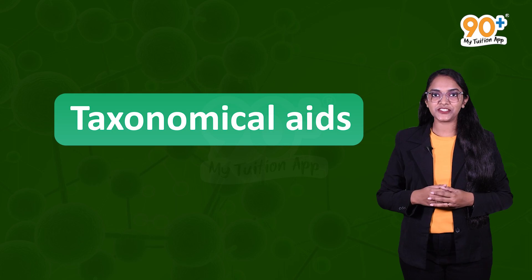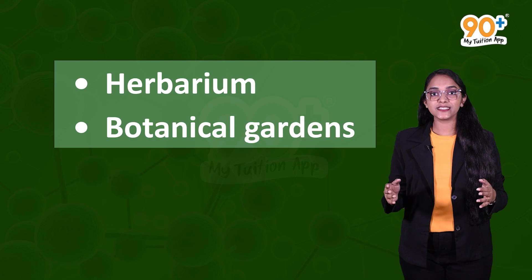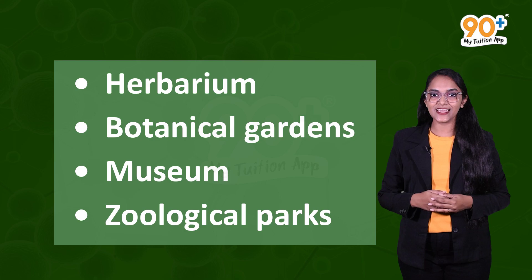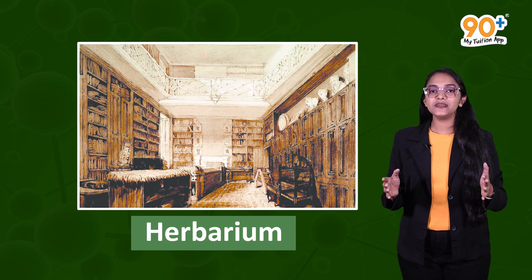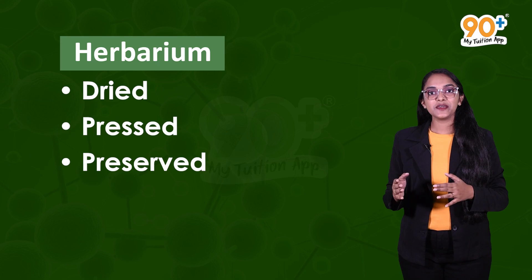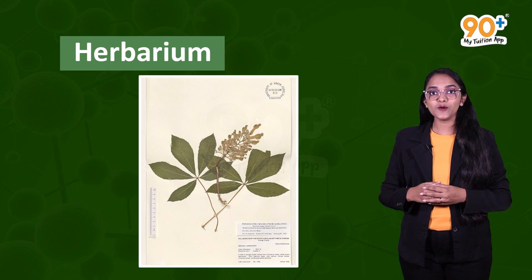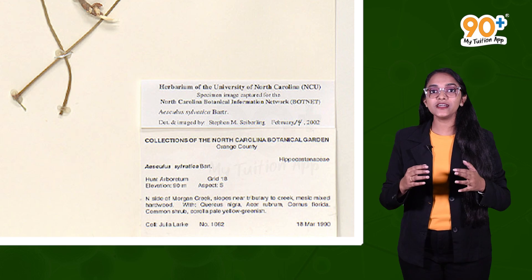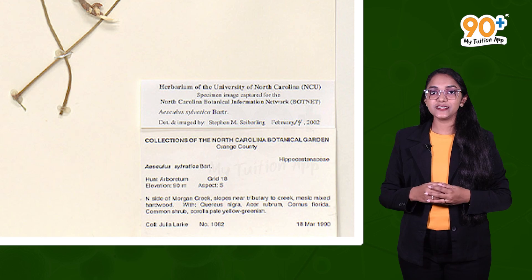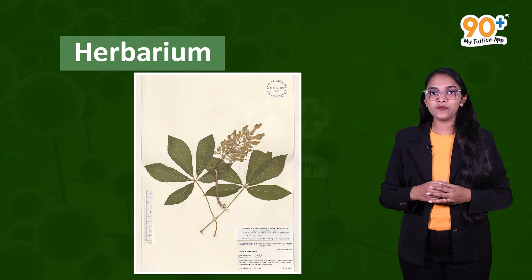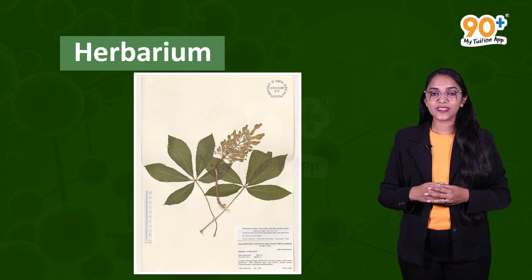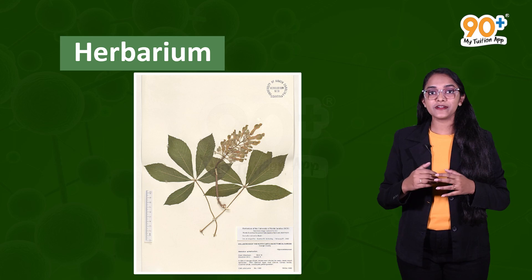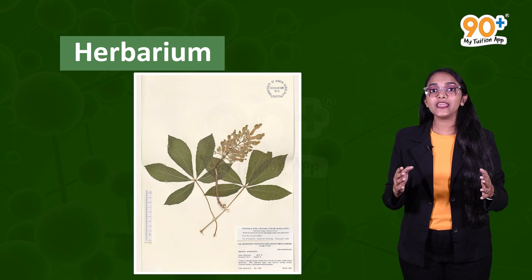Herbarium, botanical gardens, museums, zoological parks, etc. are some taxonomic aids. Herbarium is like a storehouse of collected plant specimens that are dried, pressed, and preserved on sheets. On herbarium sheets, a label indicates the scientific, English, and local names of the plant, the date and time of collection, the collector's name, family of the plant, etc. Herbarium sheets carry information about different plants from different places and periods, arranged according to the internationally accepted system of classification.